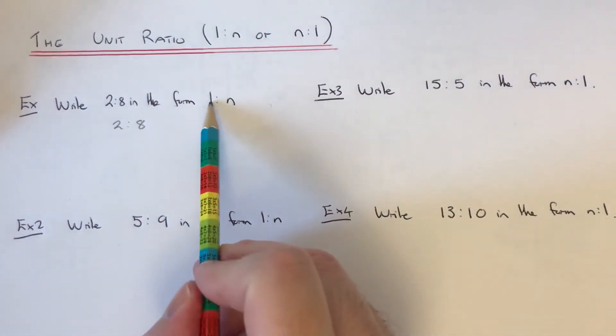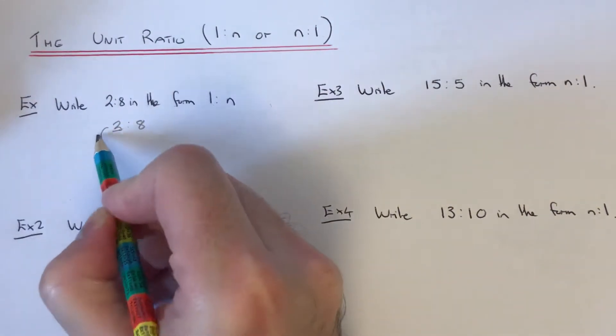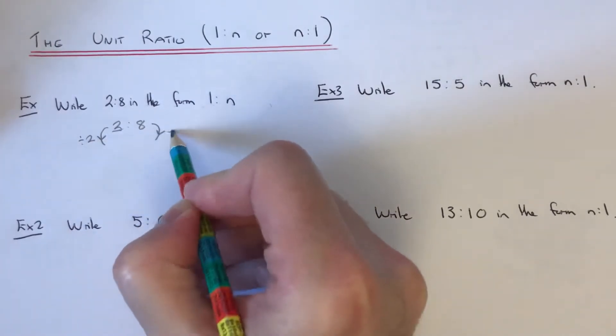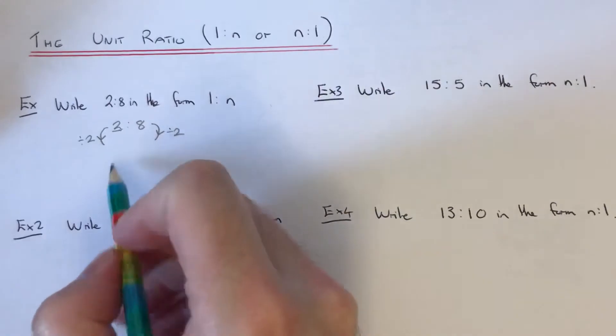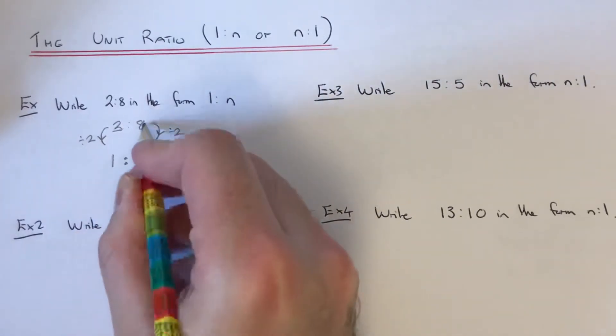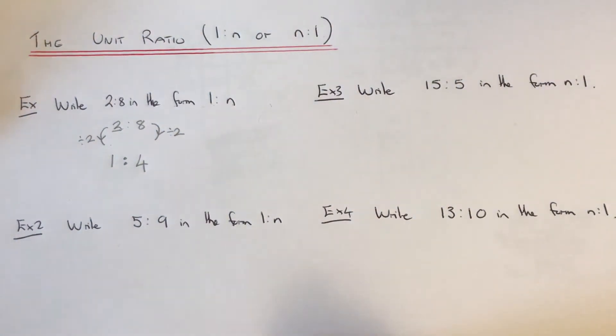So since we want the 1 on the left hand side, this means we have to divide by the number on the left hand side of the ratio, which is 2. So we have to divide both sides by 2. So 2 divided by 2 is 1 and 8 divided by 2 is 4. And there is our unit ratio.